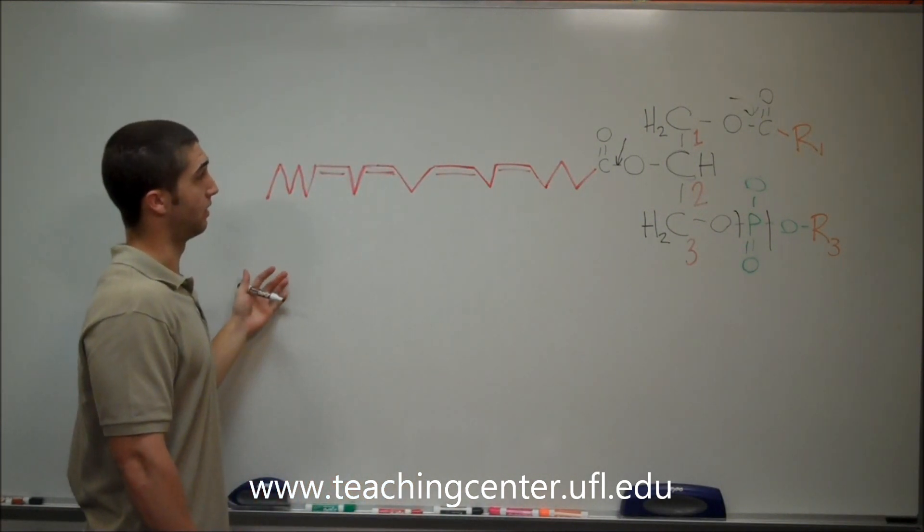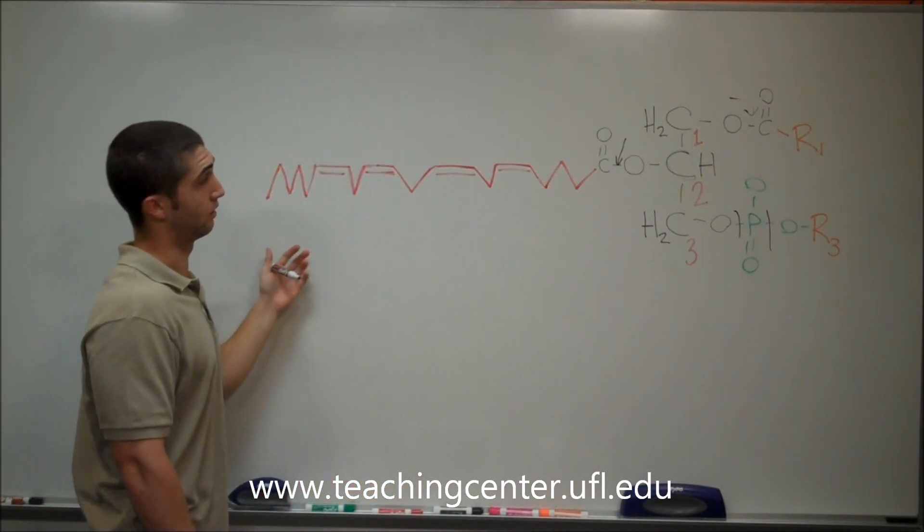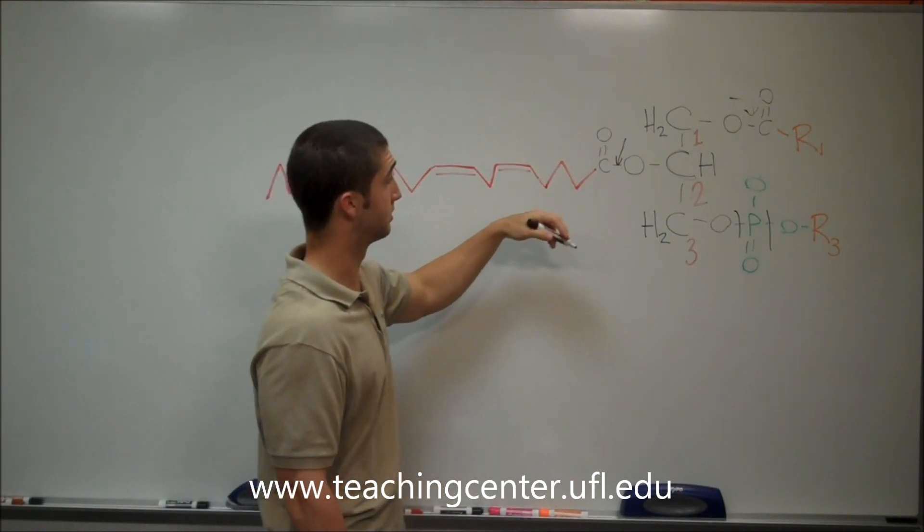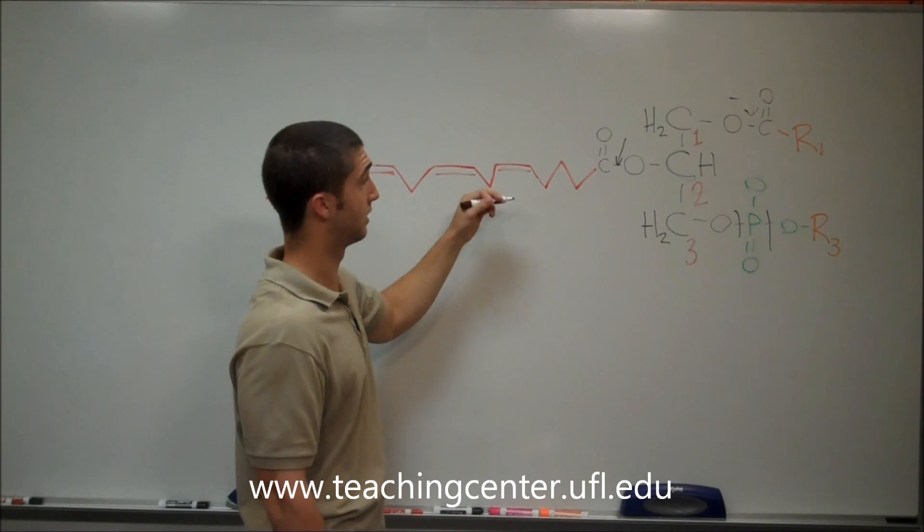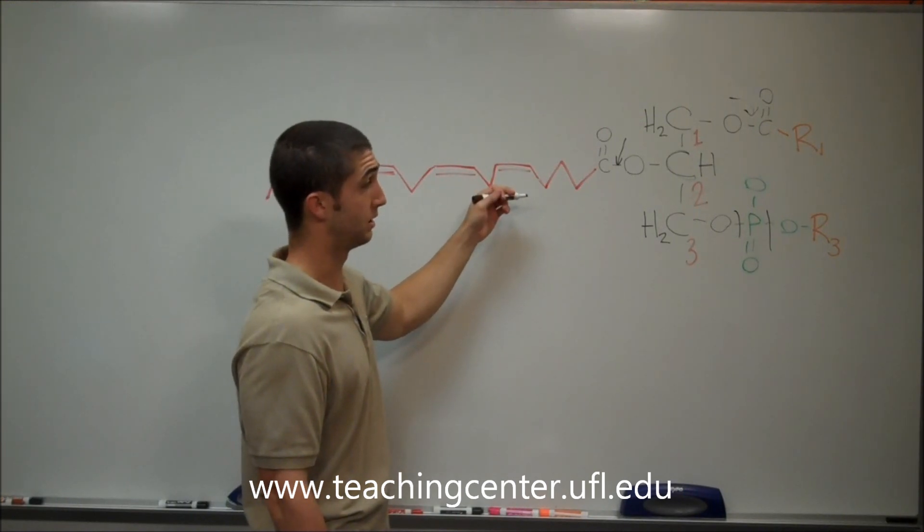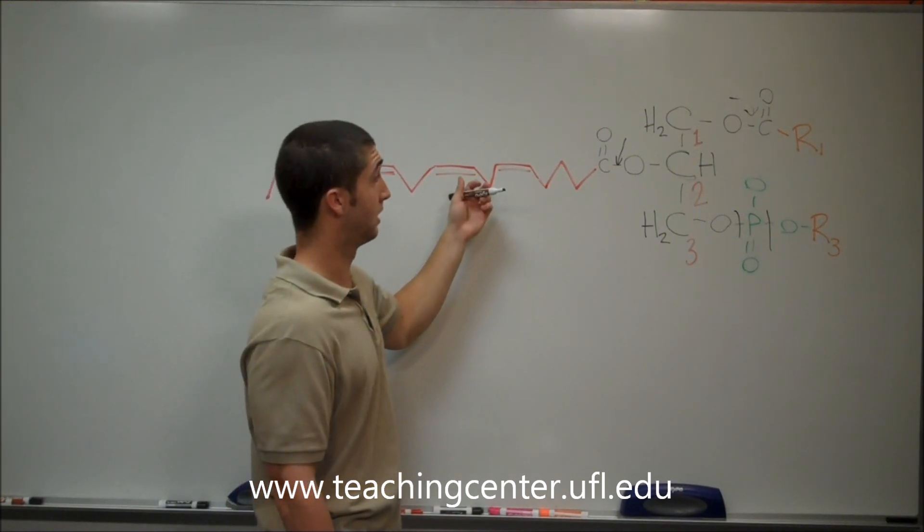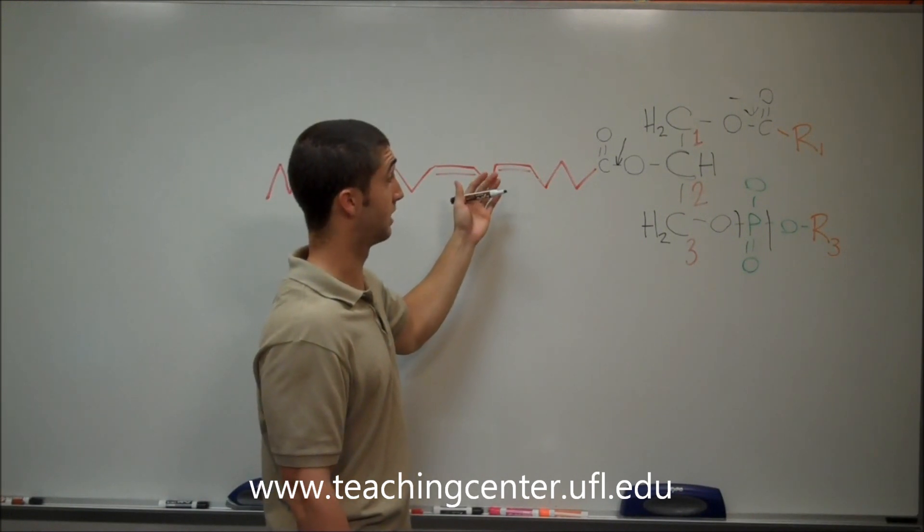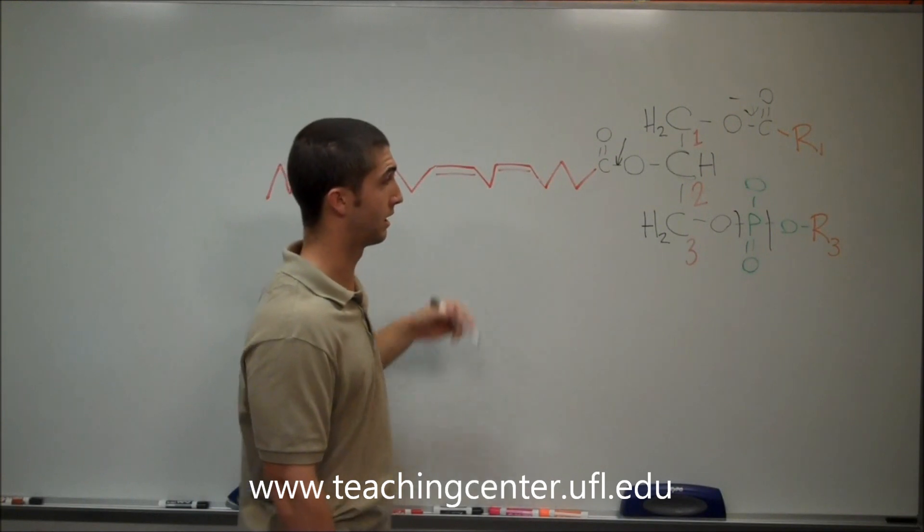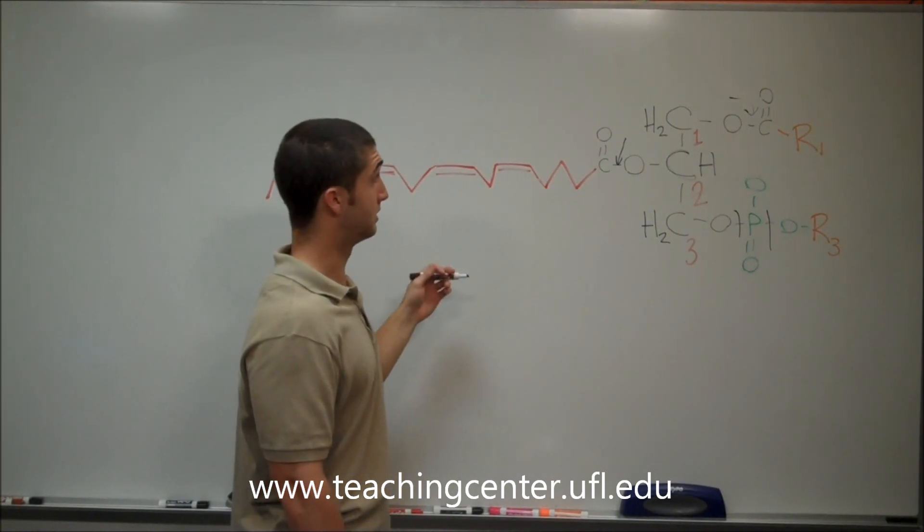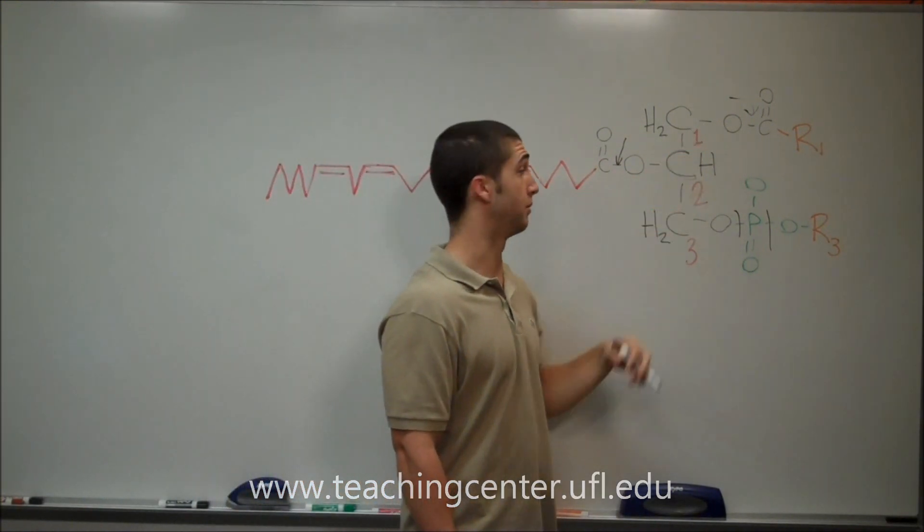We know that arachidonic acid is located on carbon number two because carbon number two has unsaturated fatty acids on it. Since phospholipase A2 cleaves the ester bond at carbon number two, that's why arachidonic acid is released from carbon number two instead of carbon number one.